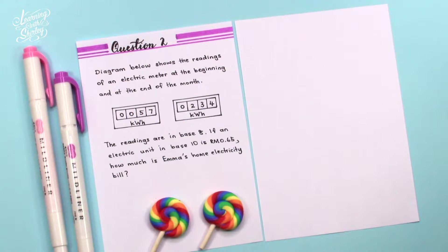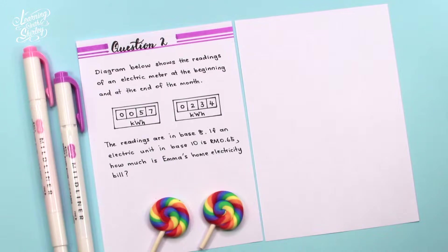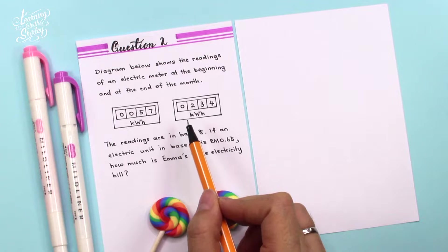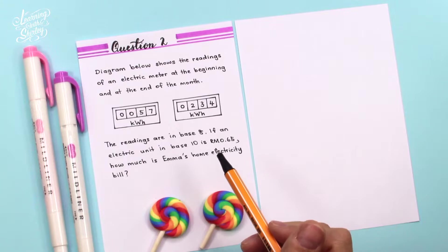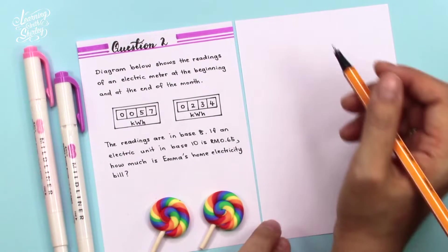For question number 2, the diagram shows the readings of an electric meter at the beginning and at the end of the month. The readings are in base 8. If one electric unit in base 10 is 65 cents, how much is Emma's home electricity bill? To solve this, we first find the difference between the two readings, then convert from base 8 to base 10 using expanded notation, and finally multiply by 65 cents.